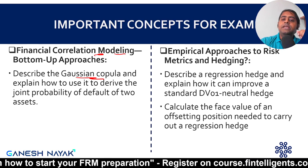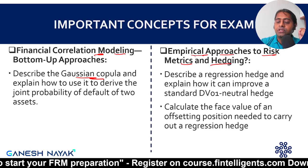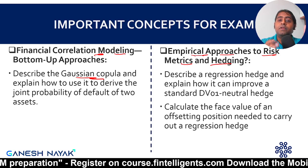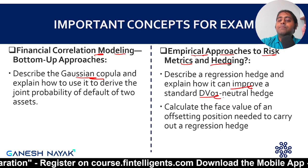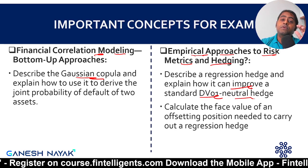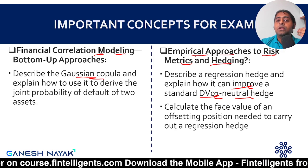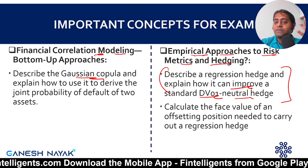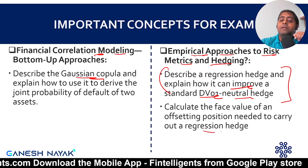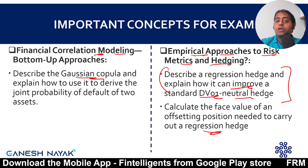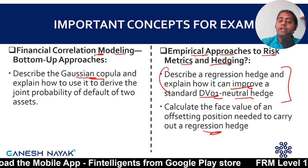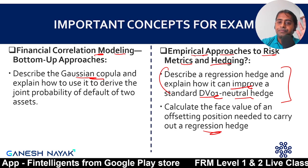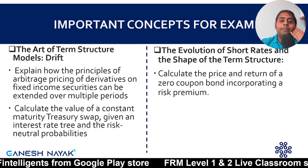The empirical approach to risk metrics and hedging chapter is about the problems with basic DV01 hedging and how to improve it. The assumption made in Level 1 is not applicable to the real world, and how you can improve it is the first key concept. They also explain how you can improve the hedge by doing regression, so regression-related content from Book 2 and Book 4 is also relevant in this chapter.